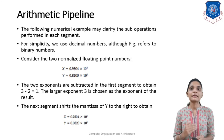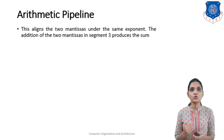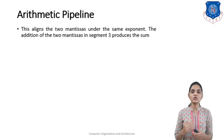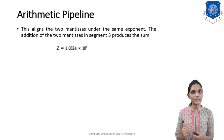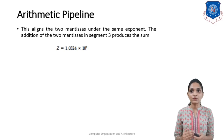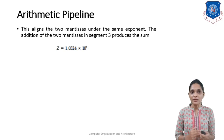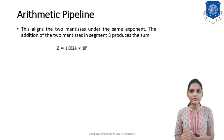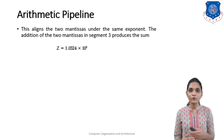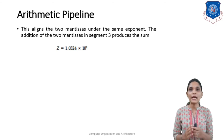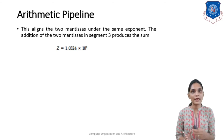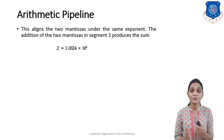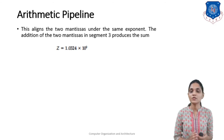The second task is completed. Then we perform the addition operation. After adding the two mantissa terms, the result is Z equals 1.0324 into 10 raised to 3. The exponents are already aligned, so for this addition we simply add the mantissa terms while the exponent term remains the same. Our result is Z equals 1.0324 into 10 raised to 3.